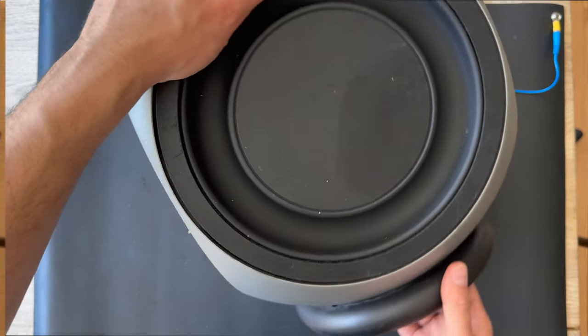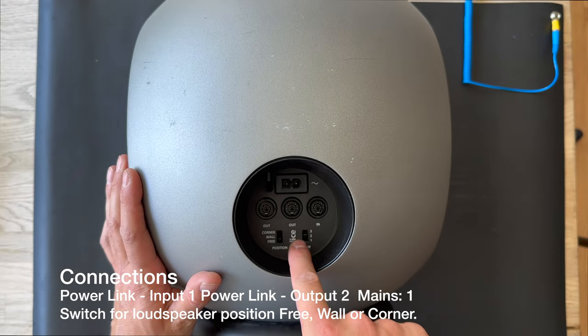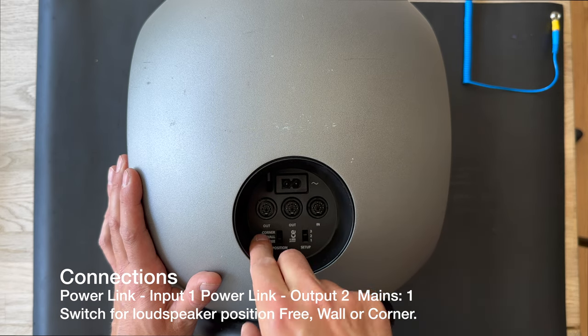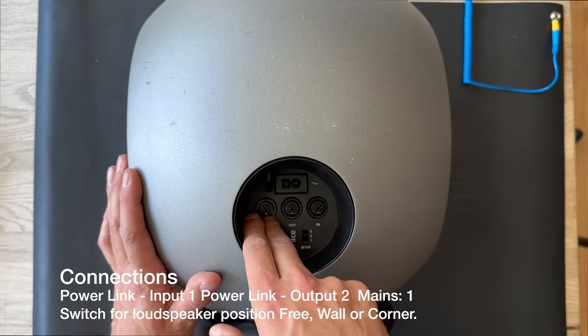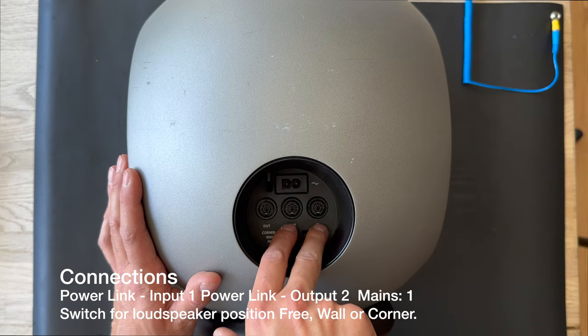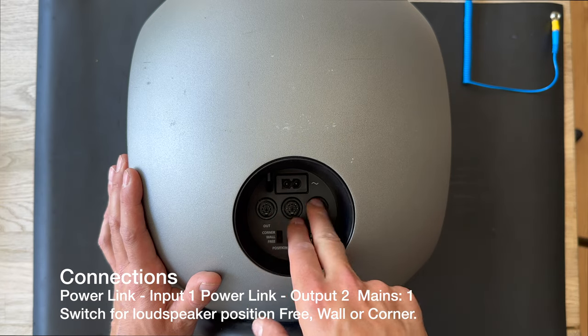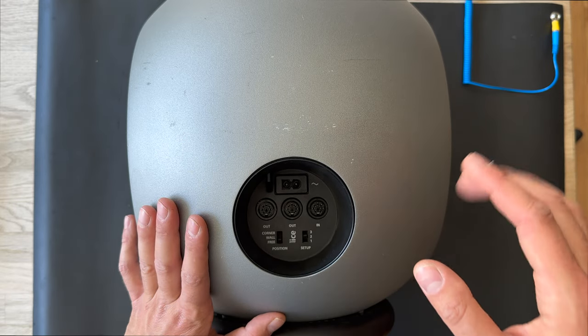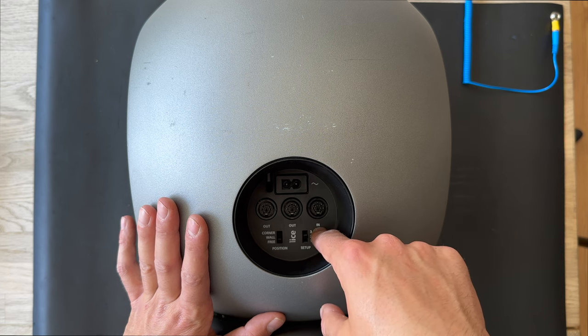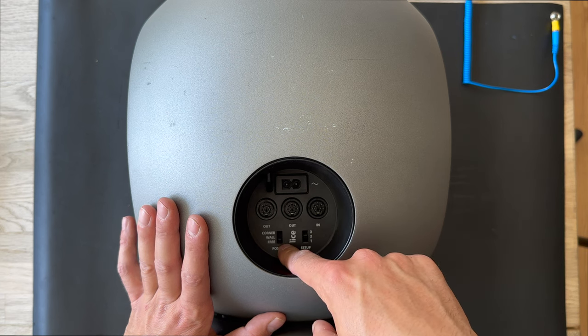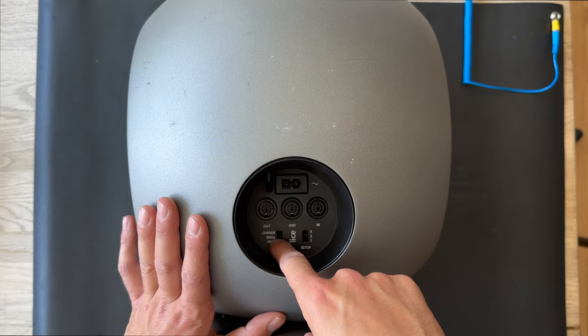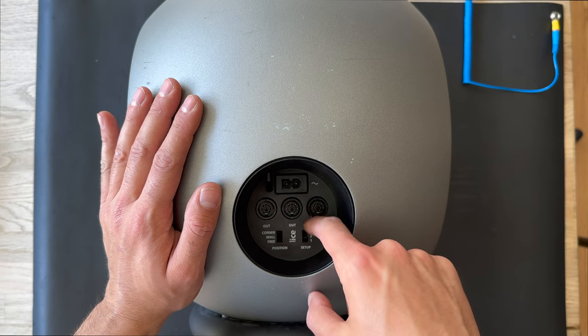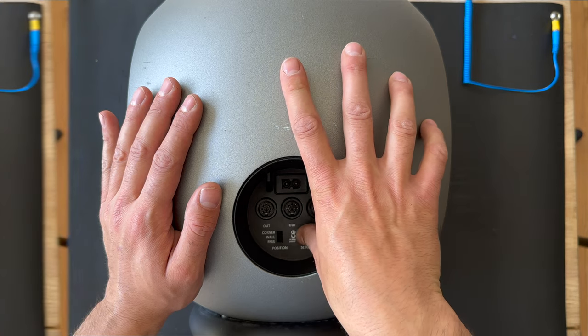If you look at the settings at the bottom, we have many options. We have the mains, the power source, and we have actually three power link inputs, one power link input and two power link outputs. So you can actually build the system around your house. You can set it in different positions. We have free, at the wall, or in the corner, and we have different setups we can put in.